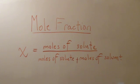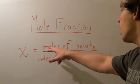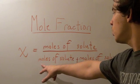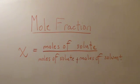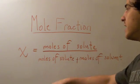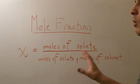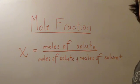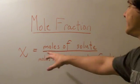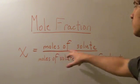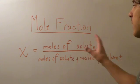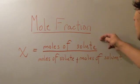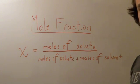Mole fraction is simply another way of finding the concentration of a solution. It's represented by the letter X. The formula reads: moles of solute divided by moles of solute plus moles of solvent — so you're dividing by the total number of moles. This formula gives you the mole fraction of the solute. You can also find the mole fraction of the solvent by simply changing the numerator to moles of solvent, divided by the total number of moles. Notice that mole fraction is a fraction — you divide moles by moles, which means it's unitless.